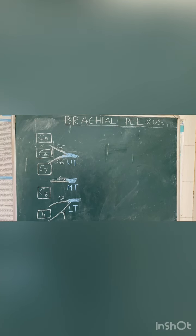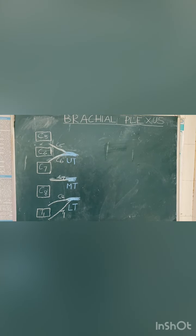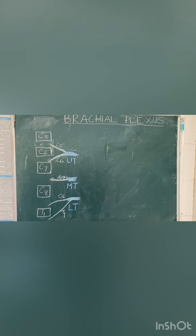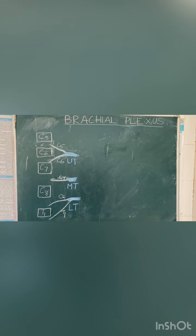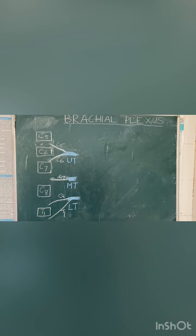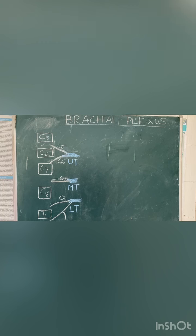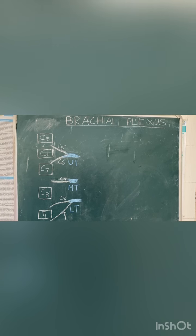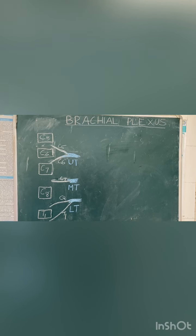The roots give rise to the trunks. The C5 and C6 roots unite to form the upper trunk. C7 continues as the middle trunk. C8 and T1 unite to form the lower trunk.